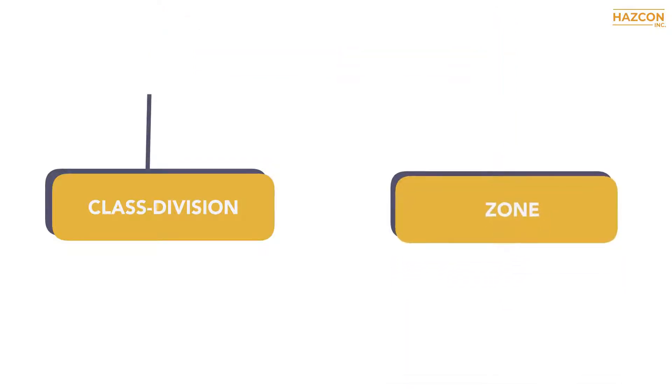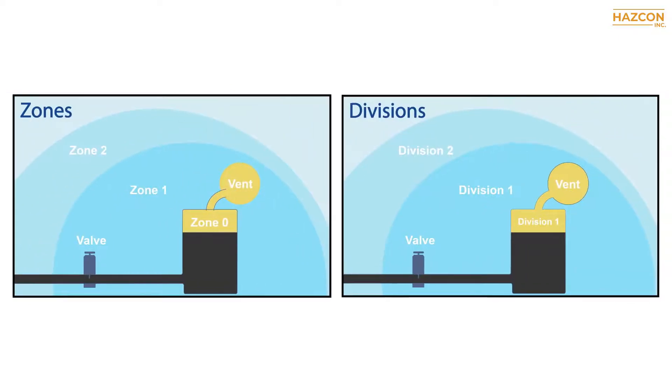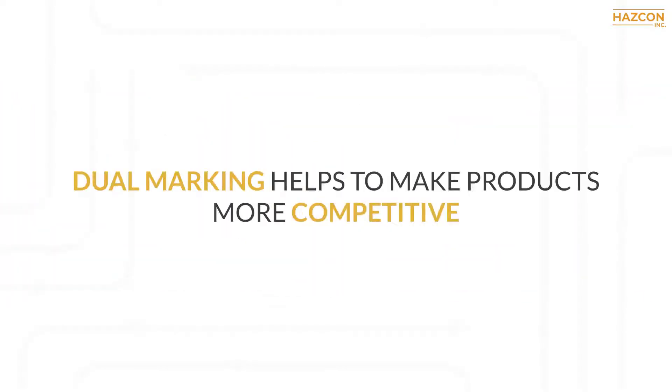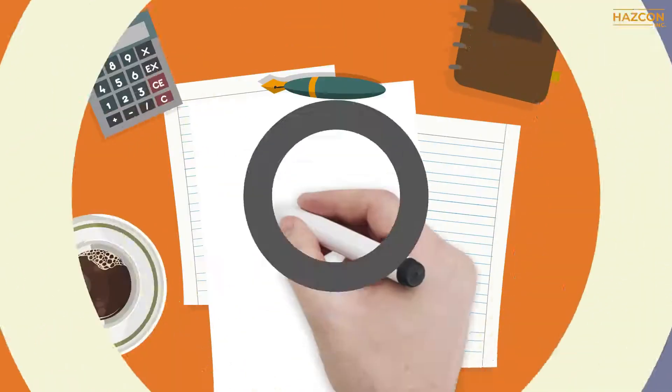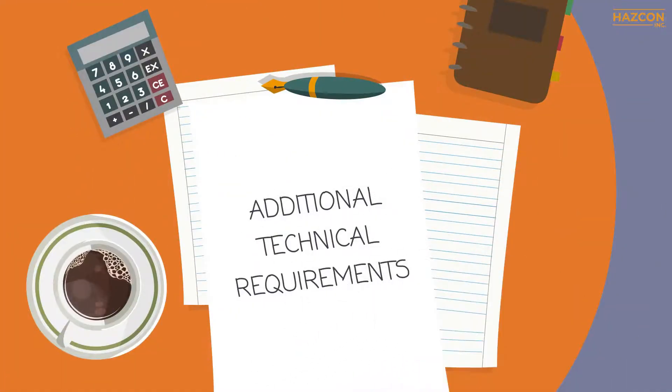Some products have dual markings with both class division and zone markings so that the product may be installed in both division and zone hazardous areas in North America. Dual marking helps to make products more competitive, but there are additional technical requirements and rules and procedures to follow.